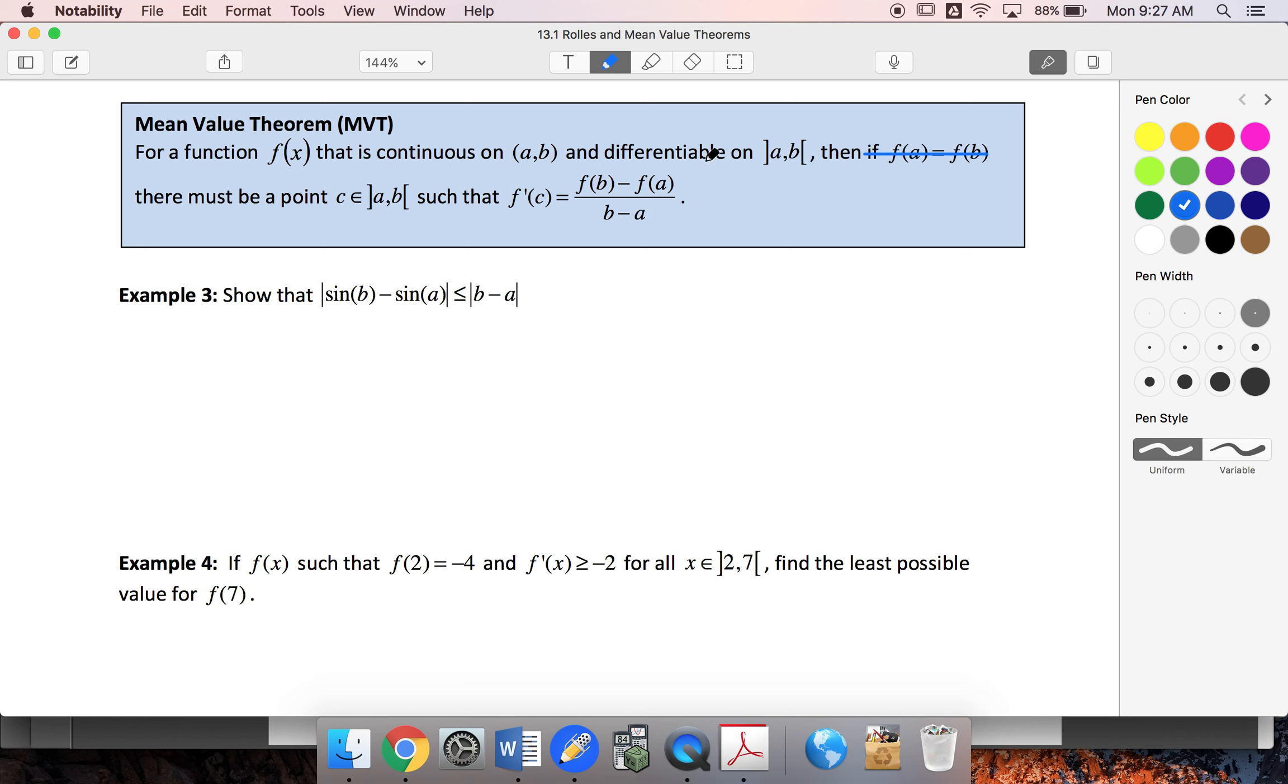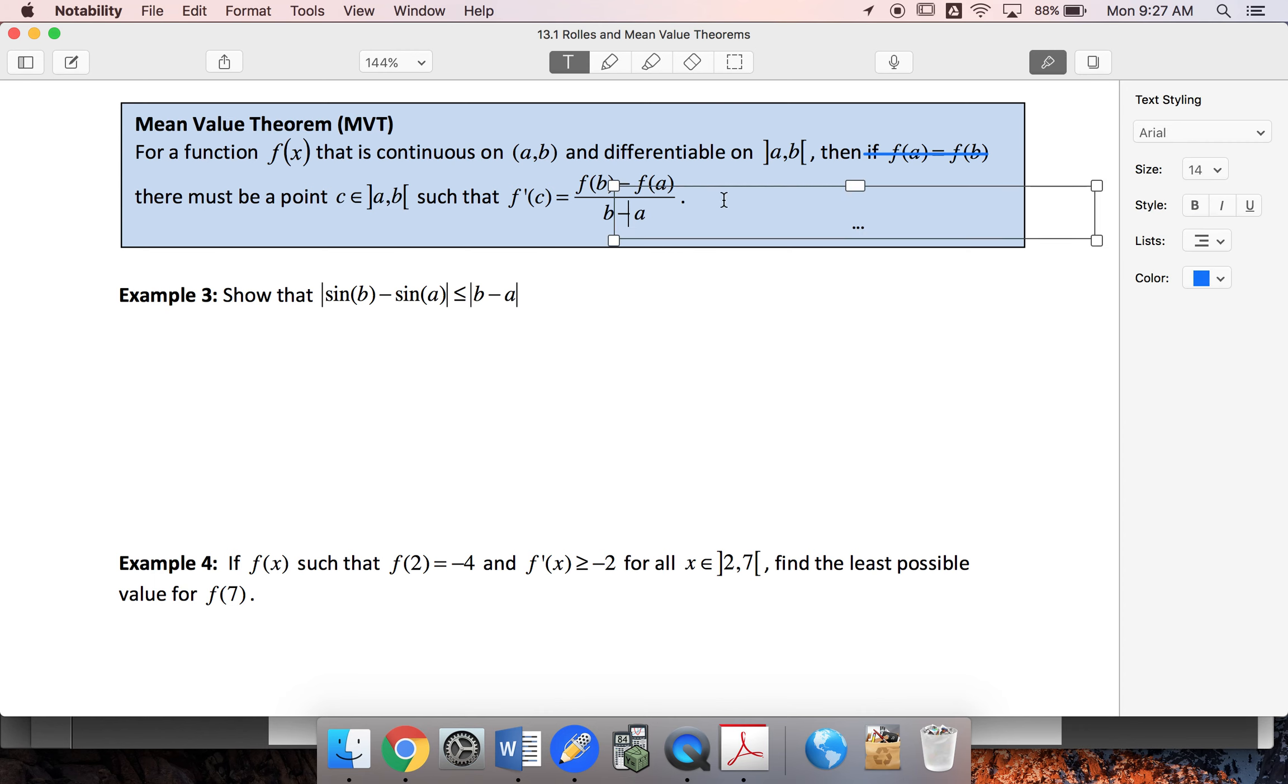So if I'm continuous and differentiable, then there's got to be a point C such that the derivative of f at C - this basically means the slope of the tangent is equal to the slope of the secant. Summing this up, slope of tangent equals slope of secant.